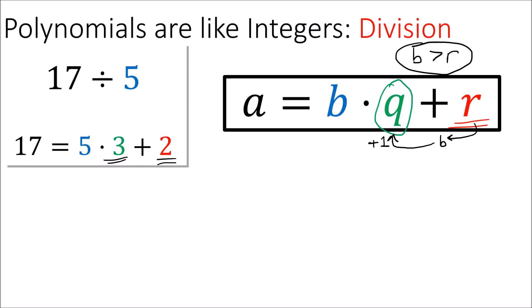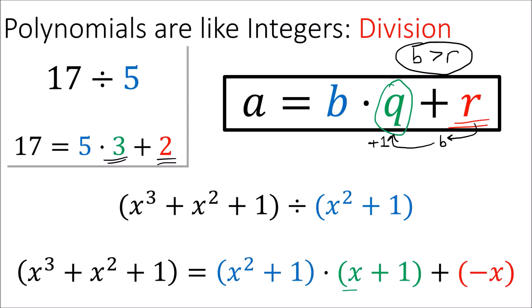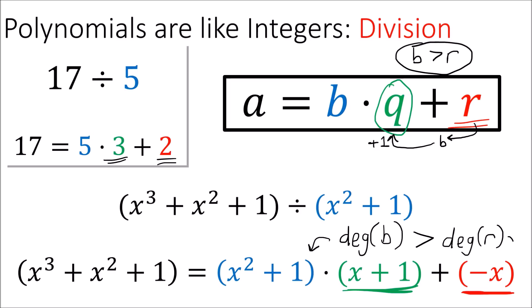This same formula also applies to polynomials. If we divide x cubed plus x squared plus 1 by another polynomial x squared plus 1, we'll get a quotient polynomial plus some extra remainder polynomial. For polynomials, the remainder can actually be negative, but the remainder polynomial will always have a degree that's less than the divisor — the blue polynomial here. So here the divisor has degree 2 because of the x squared, and the remainder polynomial has a smaller degree of 1 because of the x to the 1.